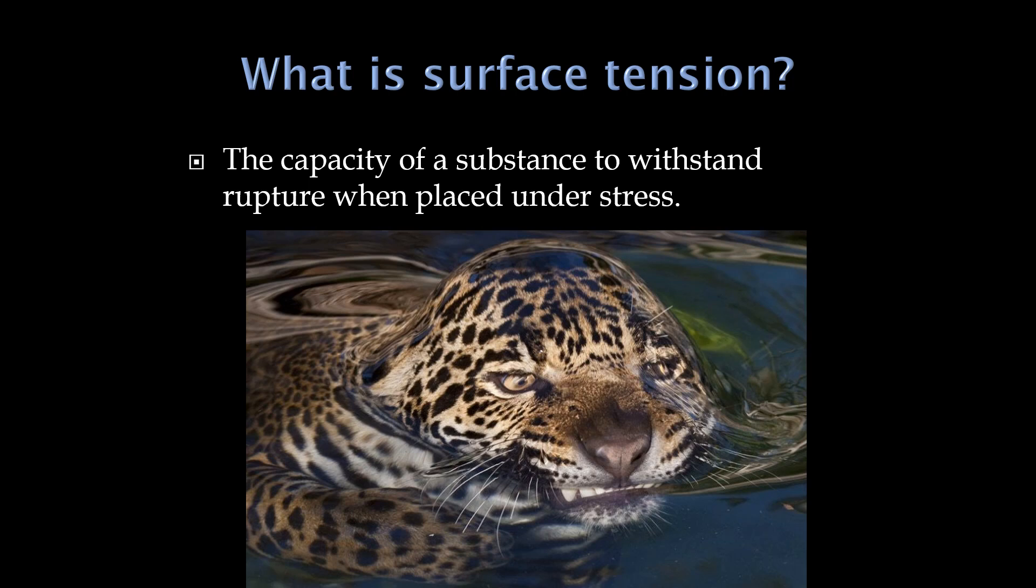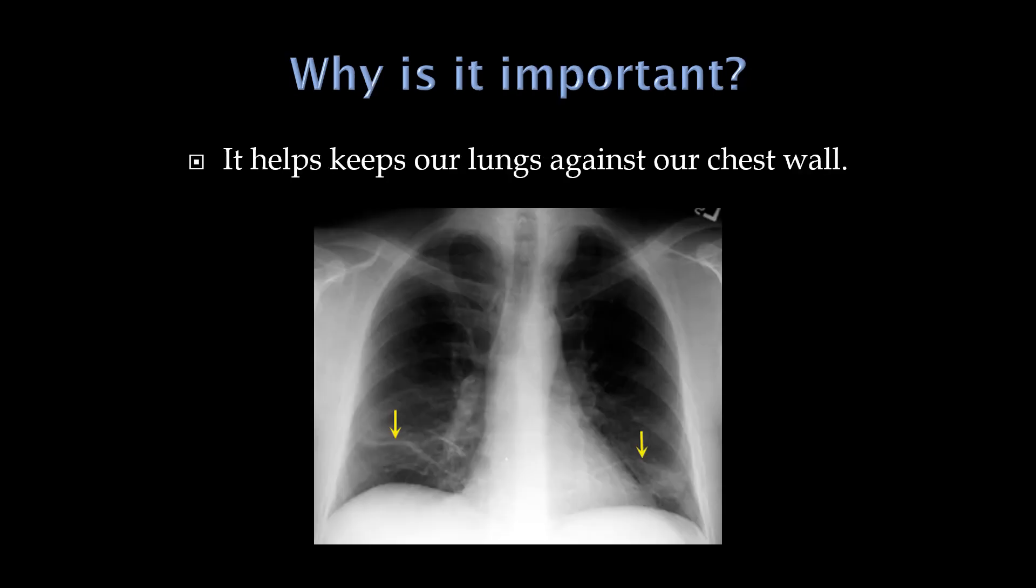The surface tension of water, in terms of why that's important for you guys, your lungs are not directly attached to your chest wall. What holds your lungs against your chest wall is the surface tension of a fluid called pleural fluid that's inside between the lungs and then the rib cage. If it weren't for the surface tension of that fluid, your lungs would collapse after every breath that you breathed out. And so surface tension is critically important for you. It's just that people don't think about that on a day-to-day basis.